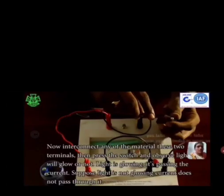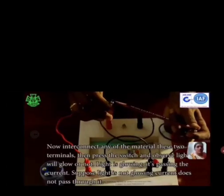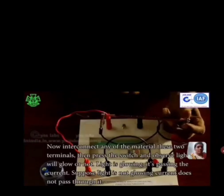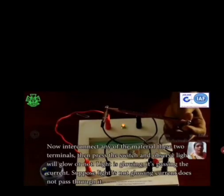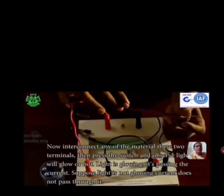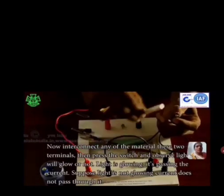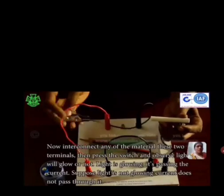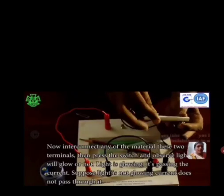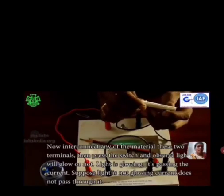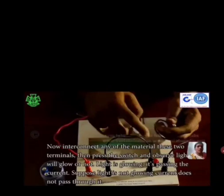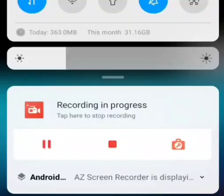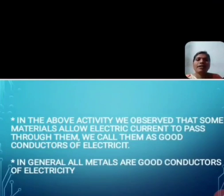We take a pencil — observe whether the bulb glows or not. The bulb is glowing. Then a piece of chalk is taken — the bulb does not glow. This means current does not pass through chalk.